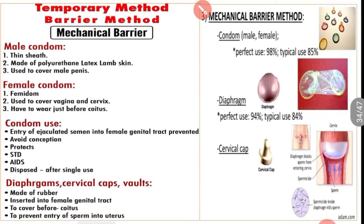Next is mechanical barrier. Mechanical barrier methods include male condom and female condom. They are mechanical devices which prevent the deposition of sperm into the vagina and their passage into the uterus.